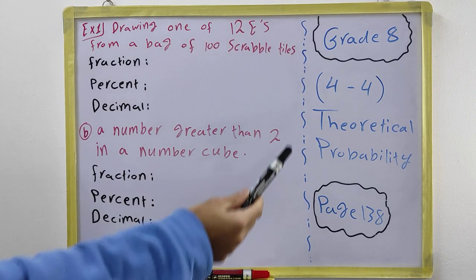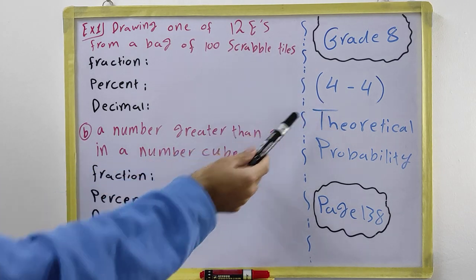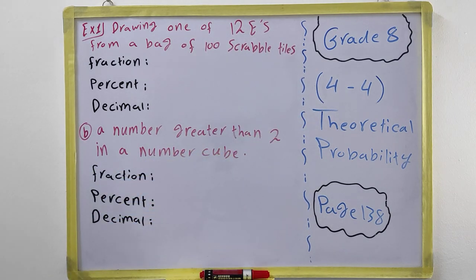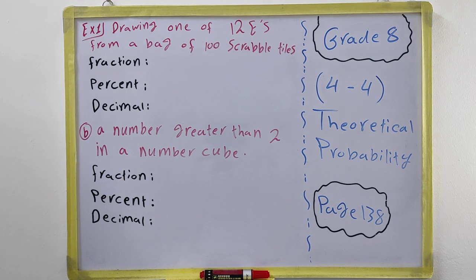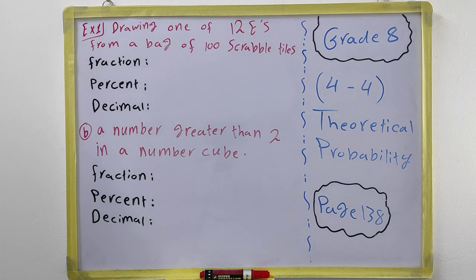Hi everyone. In this video for grade 8, we have chapter 4 section 4, which is about theoretical probability on page 138 of the book. In this section we have theoretical probability — it's nearly the same as the previous section, which is 4.3, which was about experimental probability.